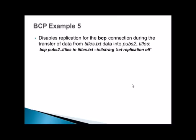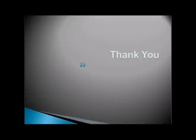Example 5 disables replication for the BCP connection during transfer of data from titles.txt into pubs2..titles: bcp pubs..titles in titles.txt -I 'set replication off'. This command disables replication for the BCP connection during the data transfer. That covers the BCP utility — try the commands discussed in these slides to get comfortable and confident working with them.